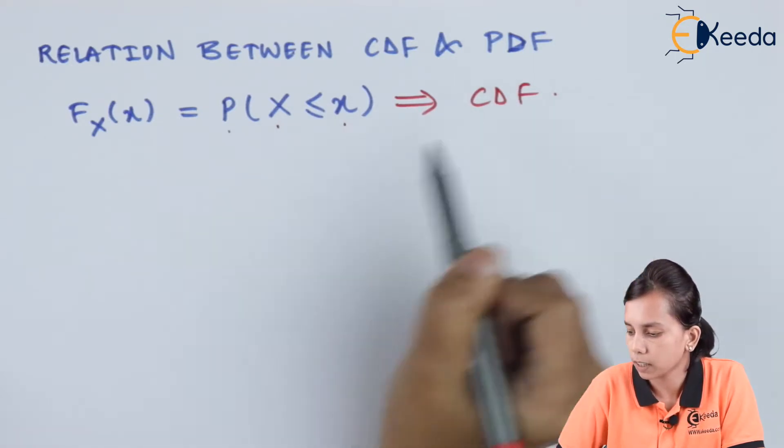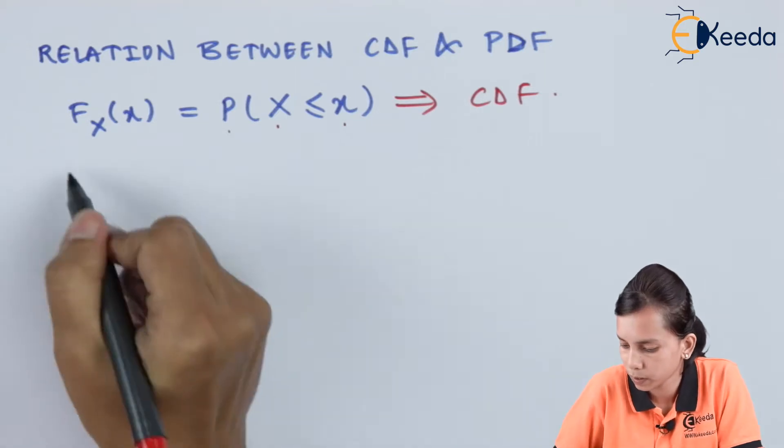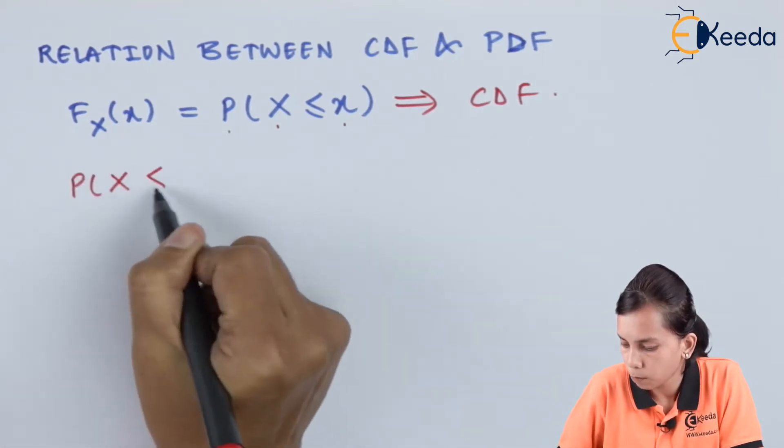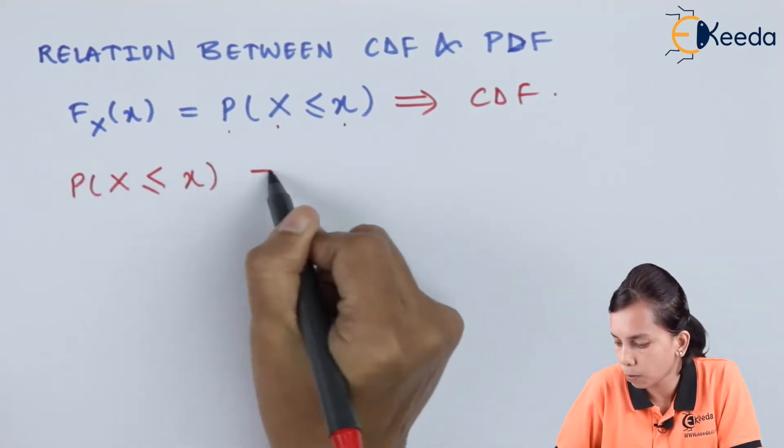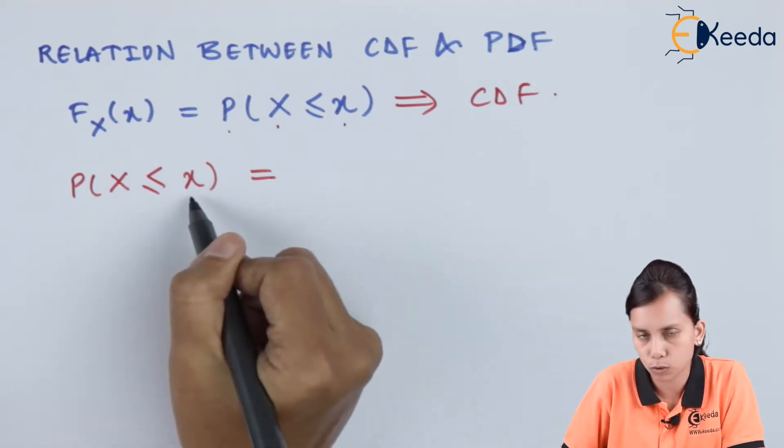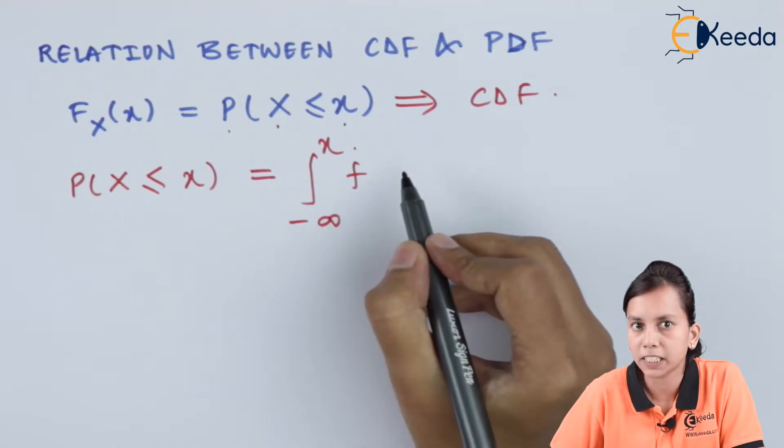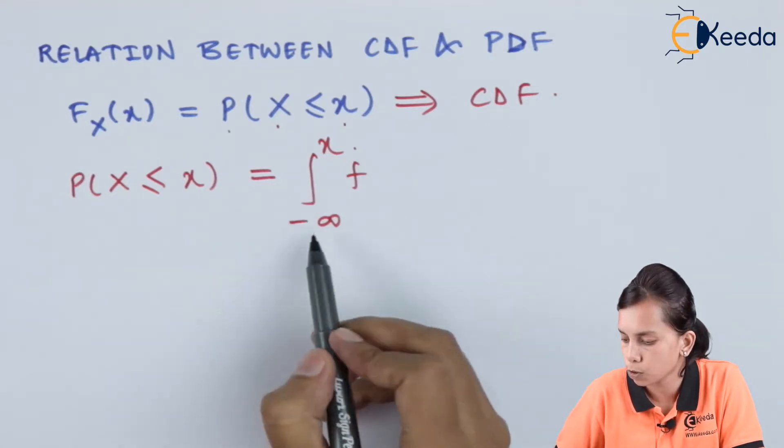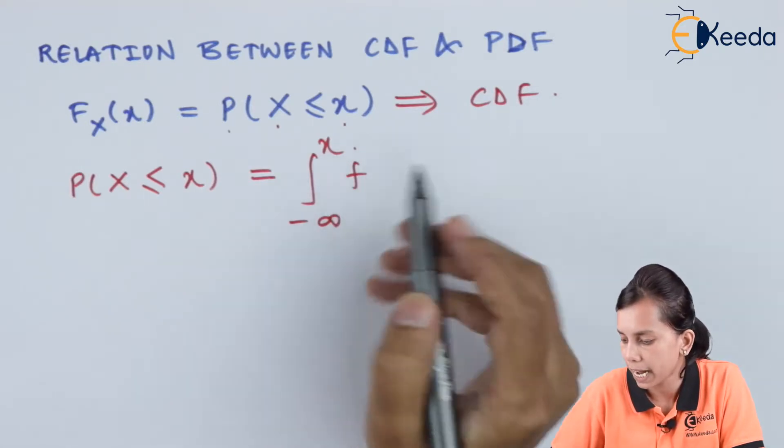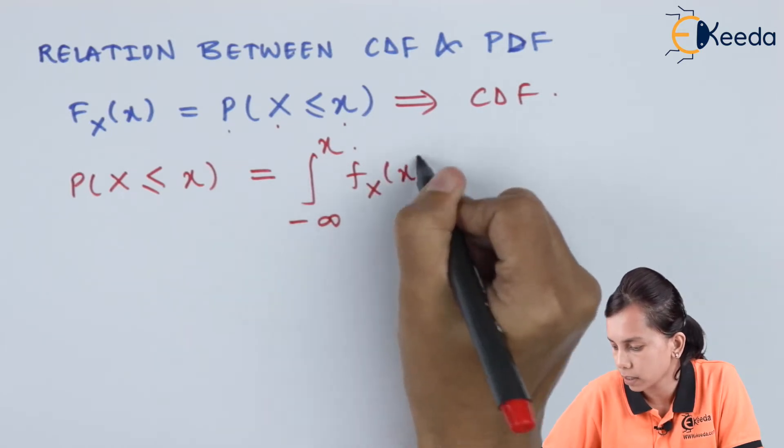Now, let us look at the PDF. Whenever I am defining the probability of X less than or equal to x, I can define this probability with the help of probability density function that it equals the integral from minus infinity to x, f_x(x) dx.